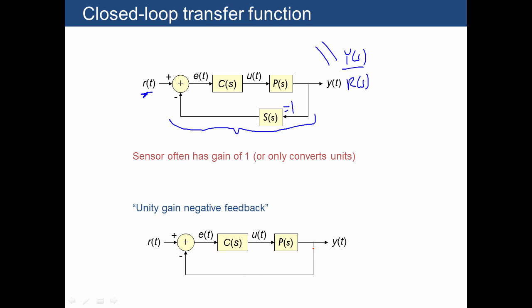Very common is we use unity gain negative feedback. Feedback means the signal coming back towards the input. Unity gain means that our sensor is only going to multiply that output by 1. And then we're going to compare that with a reference to produce our error signal. This is our most common form of feedback that we're going to use, unity gain negative feedback.